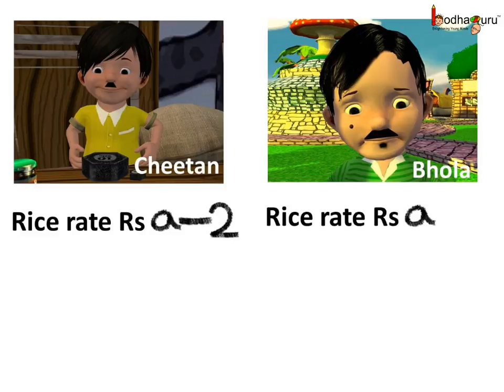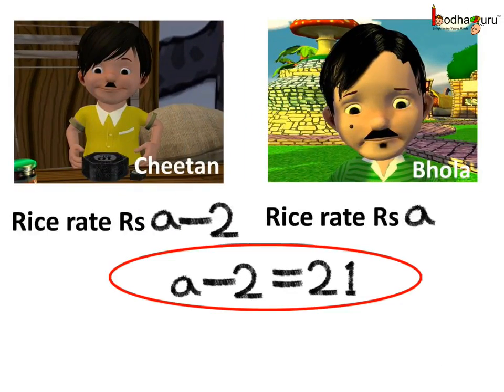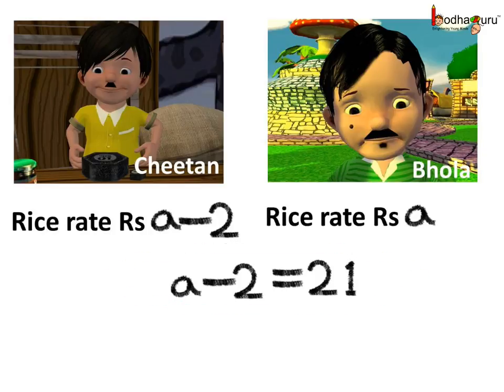Say it is Rs. A per kg. And the rate of the rice at Chetan's shop is Rs. 2 lower than the Bola shop. So it becomes A minus 2. Thus A minus 2 is equal to 21.